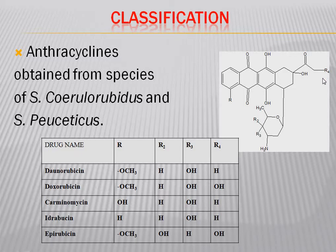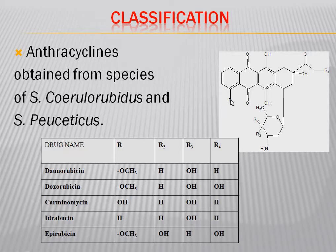The difference between daunorubicin and carminomycin is only the methoxy group in daunorubicin versus the hydroxy group in carminomycin. In idarubicin, there is hydrogen at R, hydrogen at R2, an OH group at R3, and hydrogen at R4. In epirubicin, there is a methoxy group at R4, which is the structural difference in this drug.